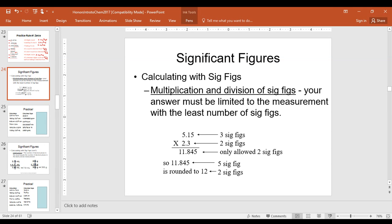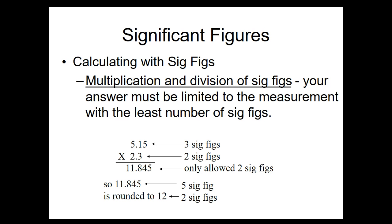What I want to go over now is how to take into account significant figures when you're doing calculations. The first type of calculation I want to go over is multiplication or division. When you're multiplying or dividing numbers in chemistry, think about significant figures when determining how to write your answer.